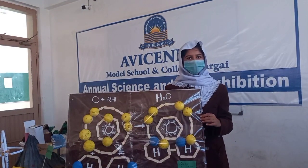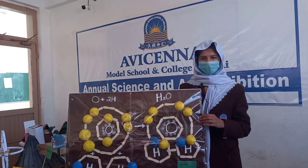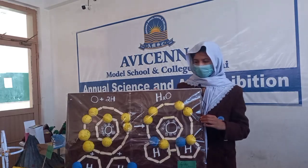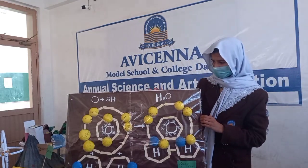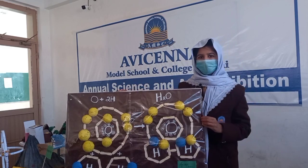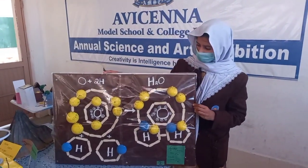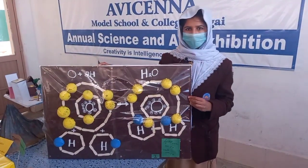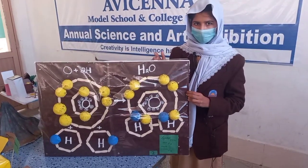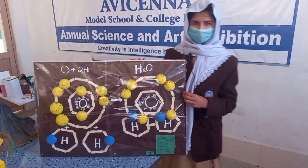Assalamu alaikum. My name is Mancha Habib. I am a student of class 7A from Jinnah House. My model is covalent bond. A covalent bond is the bond where atoms share electrons. For example, this is oxygen and two hydrogens. In the outer shell of oxygen there are two electrons missing, so hydrogen gives electrons to oxygen to form water molecules. Thank you, Avicina.